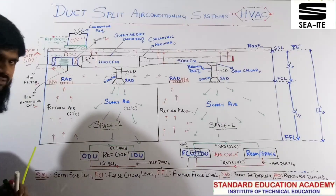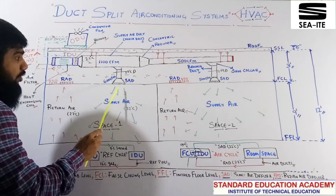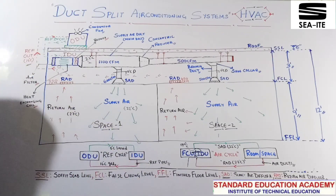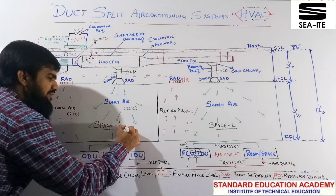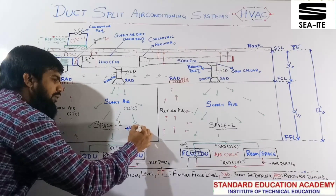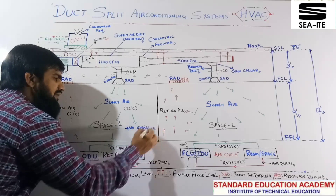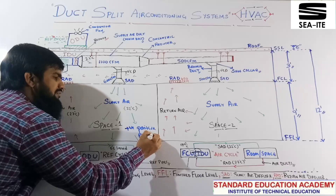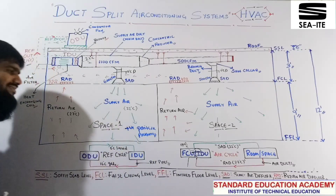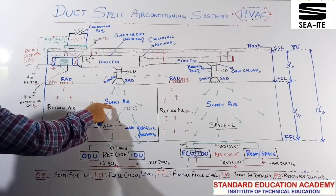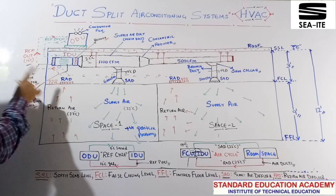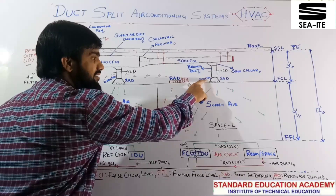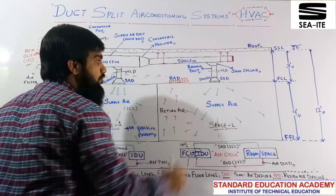One important point: I am supplying 600 CFM but I am taking back only 550 CFM. I am not taking back the total 600 CFM. Why? Because in working spaces we have to maintain positive pressure. That is the reason why we take back less air compared with supply. Supply CFM 600, return CFM 550. Similarly for the other space, supply CFM 500, return CFM 450.